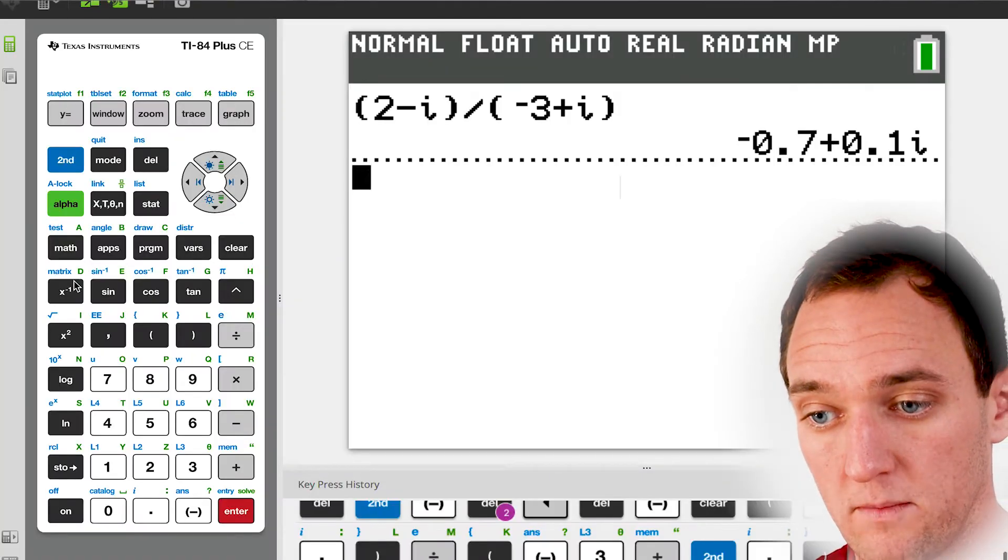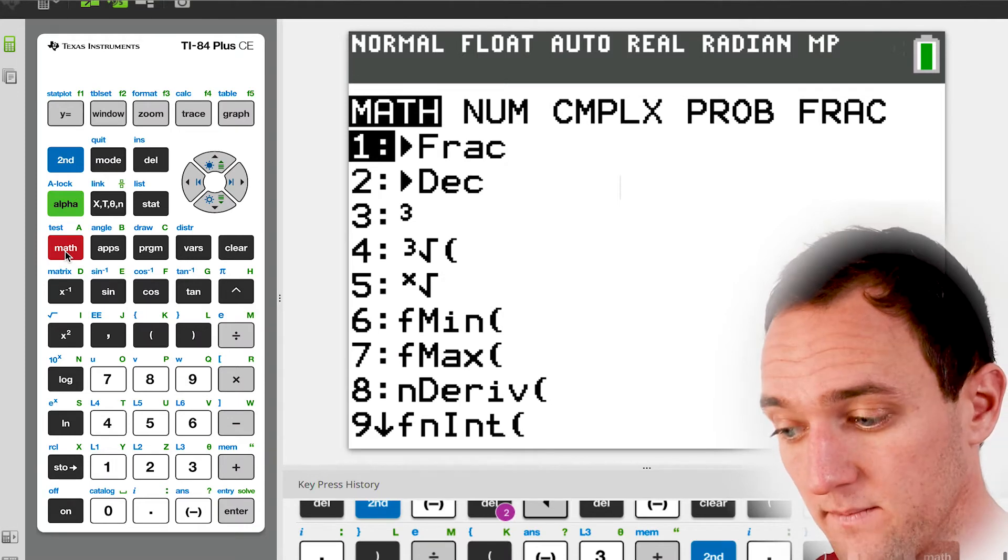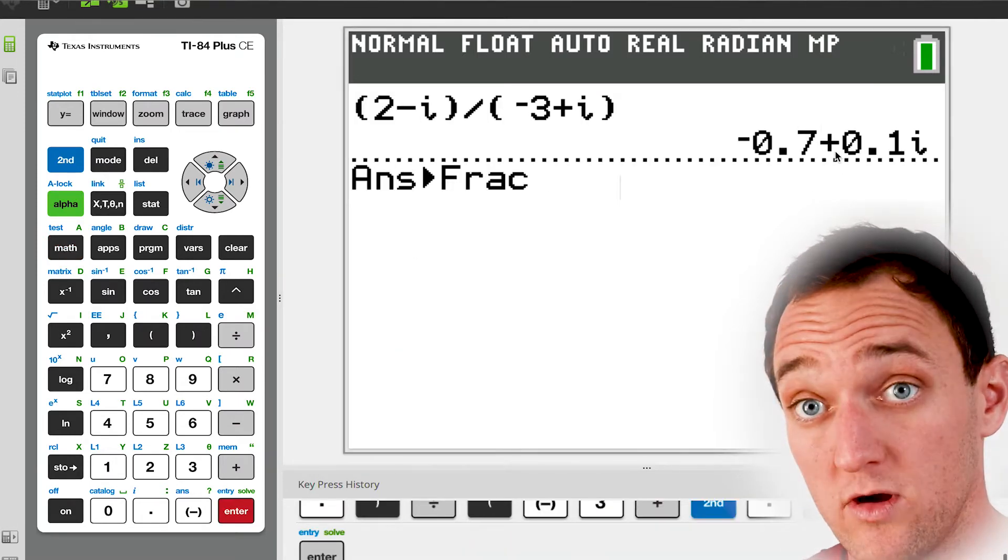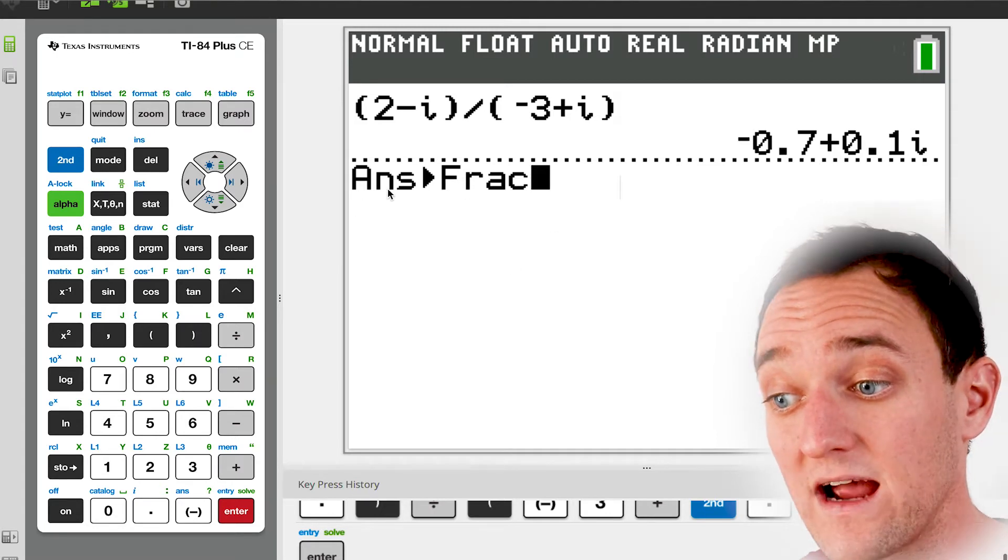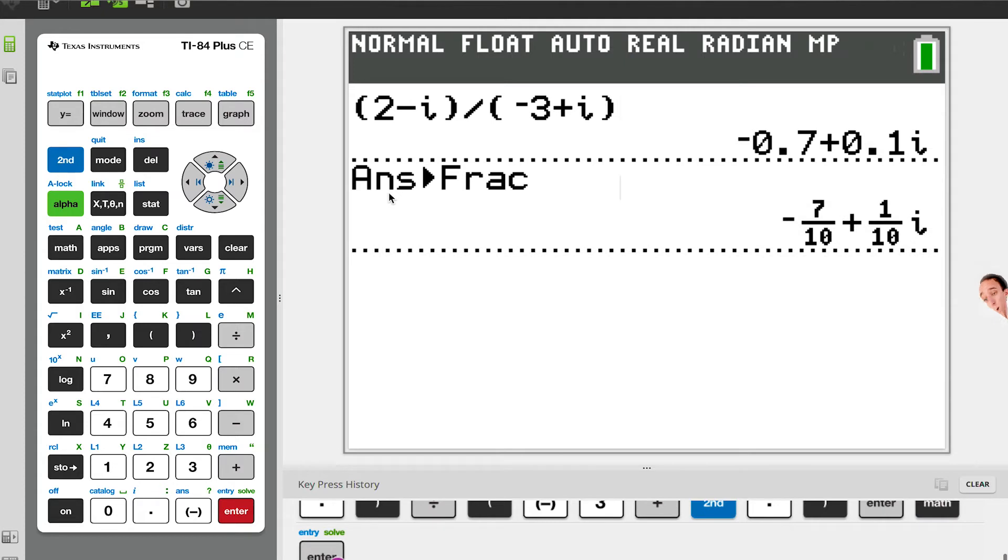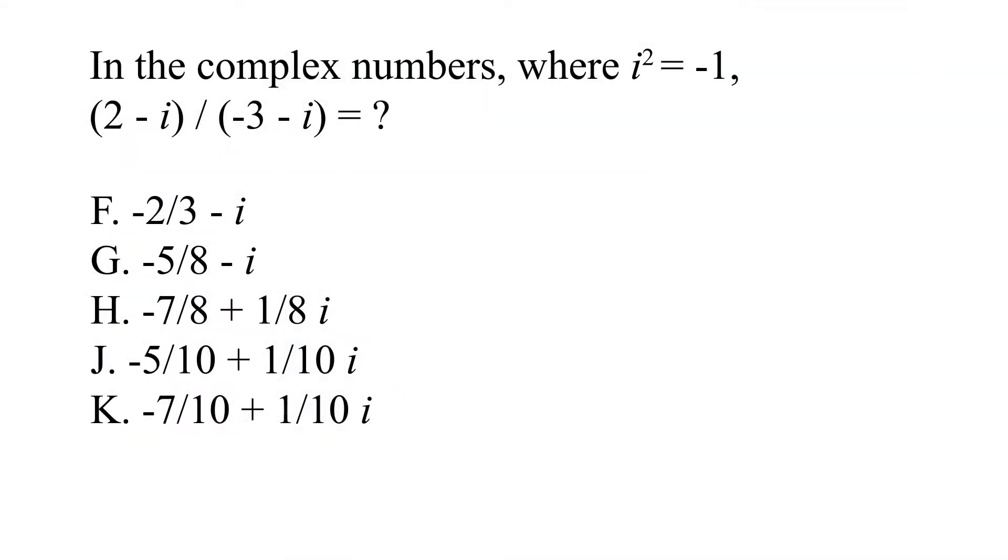But there's this useful thing. If you go to math, frac, hit enter. This means take the answer previously got and turn it into fraction form. So take my answer and make it into a fraction and boom, we've got fractions. So negative 7 over 10 plus 1 over 10 i, we can go check our answers here and there we go. K looks about right. That's awesome for us.